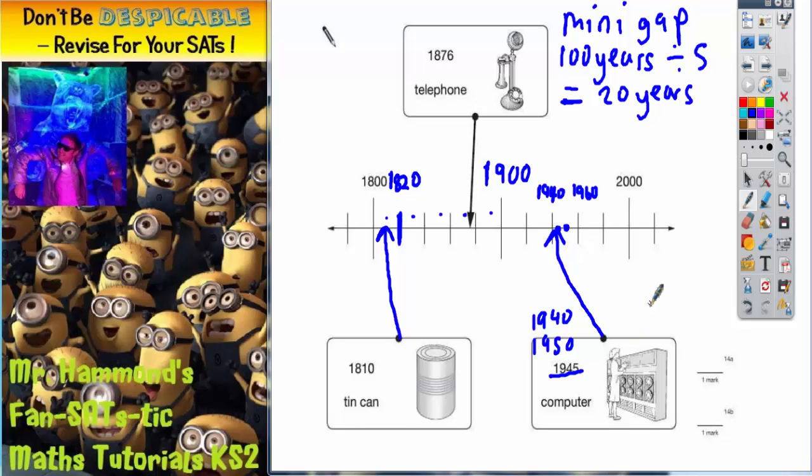And that's the answer. But the hardest bit about that question is working out that each mini-gap is worth 20 years. So we've got a gap of 100 split into five mini-gaps giving you 20 years in each mini-gap.